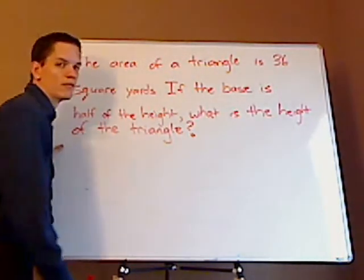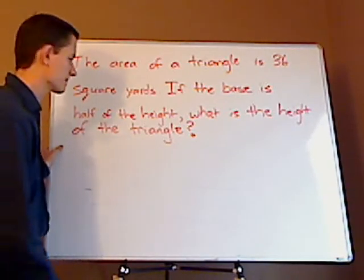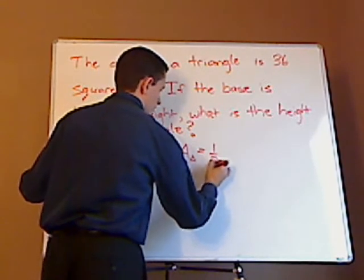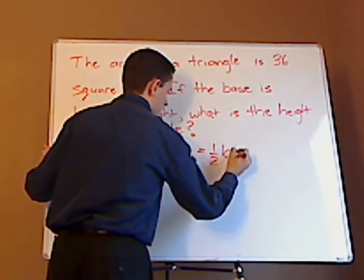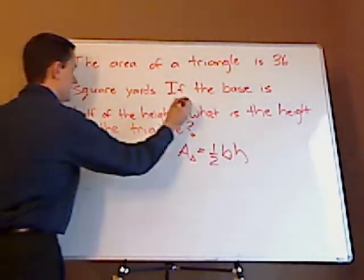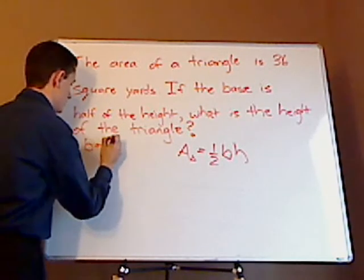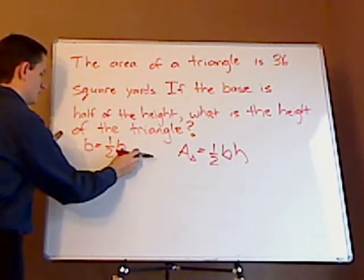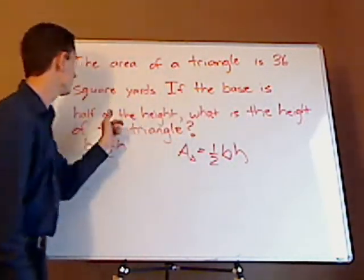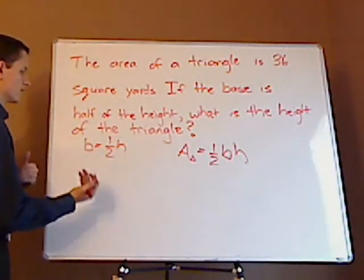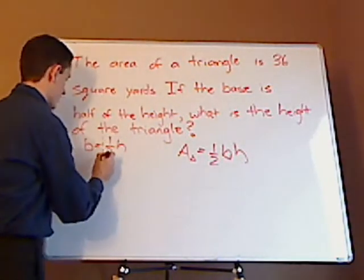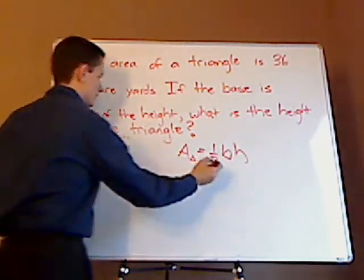Alright, do you remember the area formula for a triangle? It's one-half base times height. Now, you're told that the base is one-half the height. If the base is half of the height and you're looking for height, you want to just put this in terms of h. So you take this and simply plug it in.